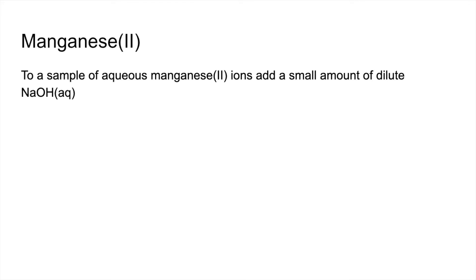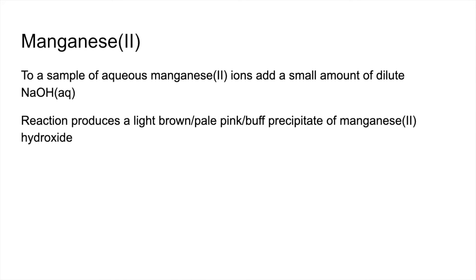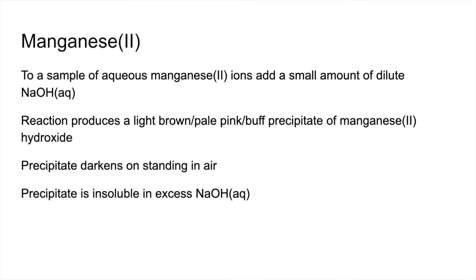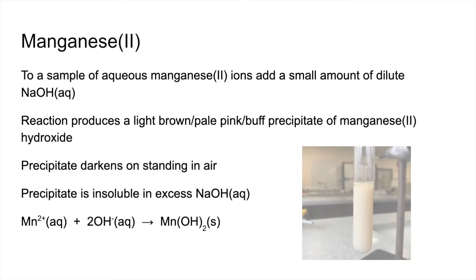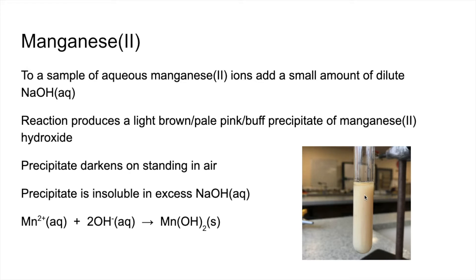Manganese-2 now — very similar setup. Add a small amount of dilute aqueous sodium hydroxide. The reaction gives a light brown, pale pink, or buff-coloured precipitate of manganese-2 hydroxide. The precipitate darkens on standing in air and is insoluble in excess sodium hydroxide. You can see it's sort of light brown in colour and darkens on exposure to air.